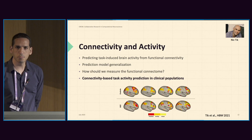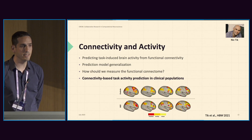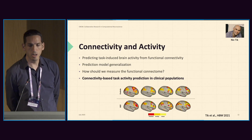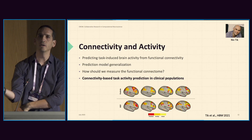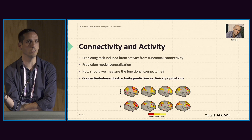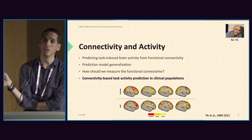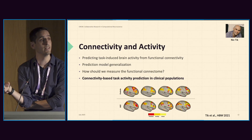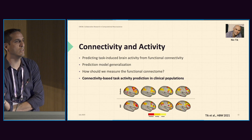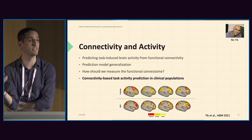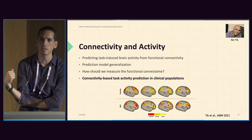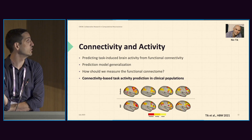Another aspect of the generalizability of our models is generalizing to clinical populations. We recently showed that we can build a model relating activity and connectivity on healthy participants and then apply the model on connectivity features of patients diagnosed with schizophrenia and still get accurate activations.